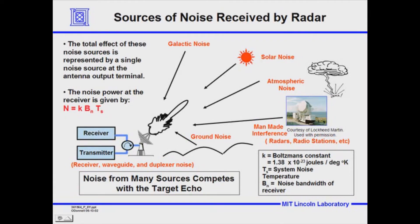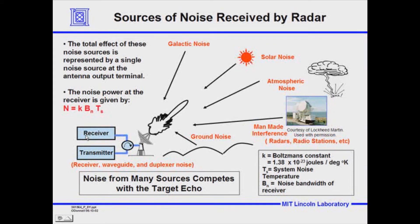Noise can come from lots of different sources, reflect off the ground and go into the antenna side lobes — places in the antenna that don't have huge reflectivity but all add together — and of course there's going to be noise that comes from portions of the receiver and waveguide all the way back into the depths of the receiver.